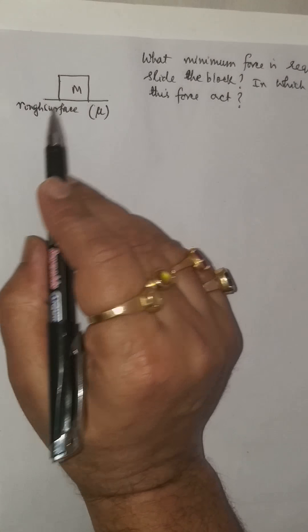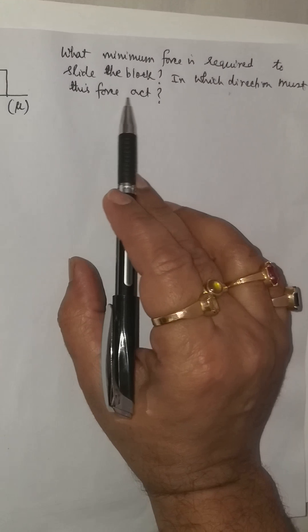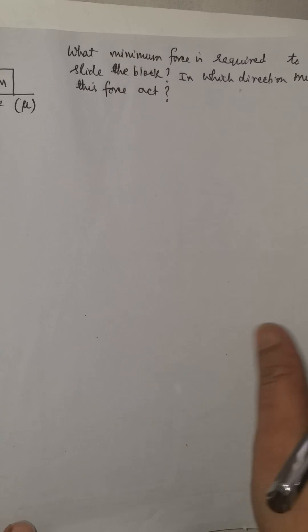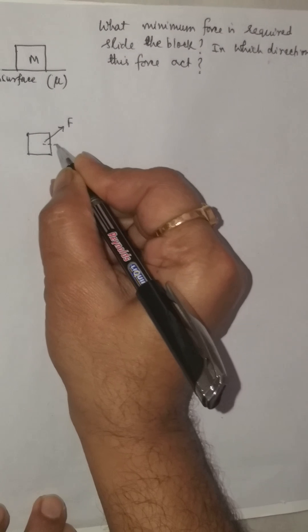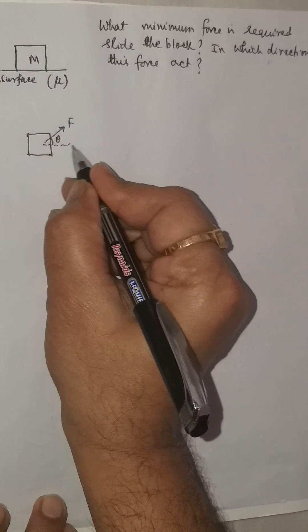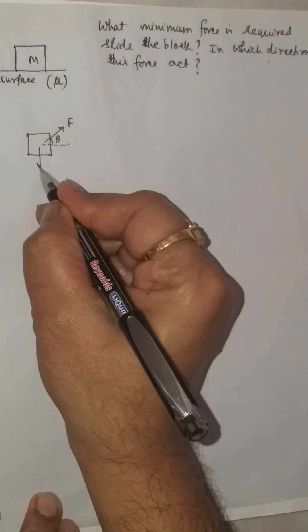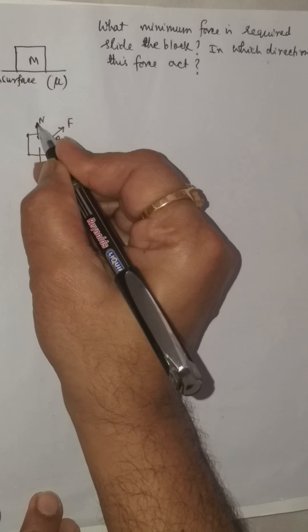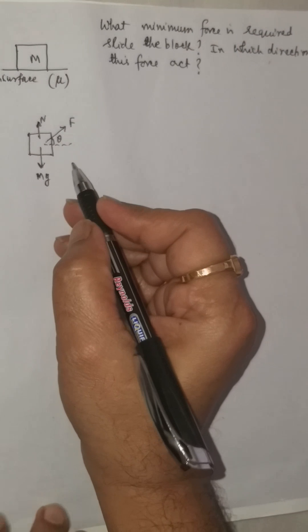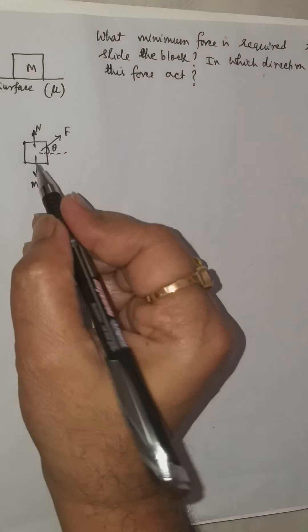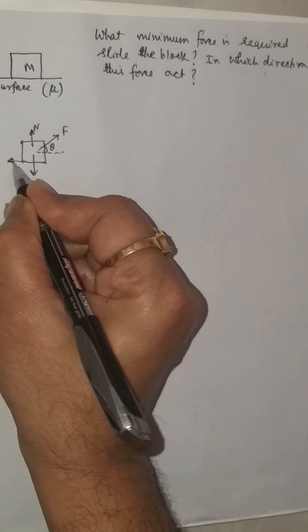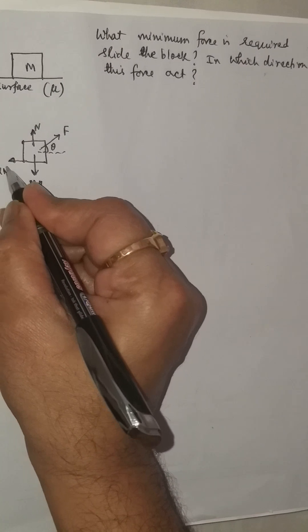A block of mass m is placed over a rough horizontal surface with coefficient of friction mu. What minimum force is required to just slide the block, and in which direction must this force act? Suppose a force F acts at an angle theta making with the horizontal. The minimum force condition means the body is just on the verge of moving, so the force of friction has just become the maximum static friction, that is mu times normal reaction.